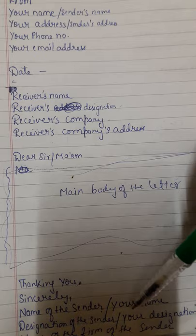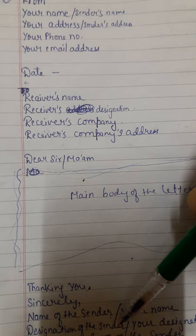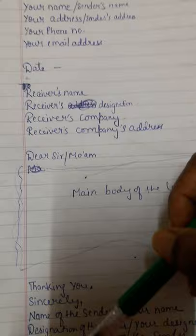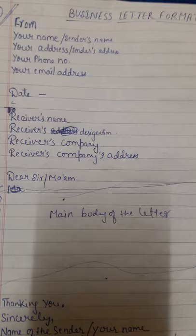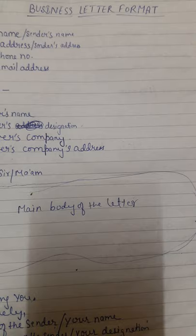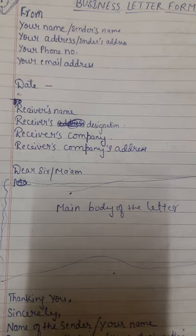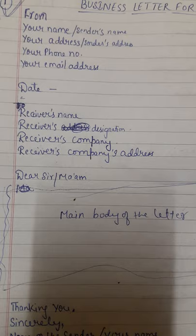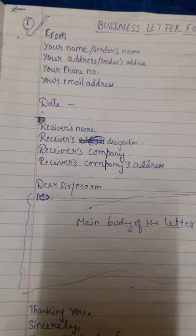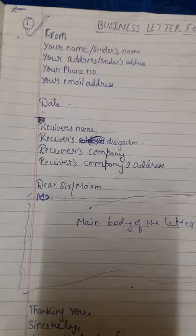Just below the complimentary close, write the name of the sender, because you are writing the letter. Just below that write your designation, and just below that write the name of the company you are working in. This completes the whole letter. You need to remember where to write the sender's address and where to write the receiver's address to make your answer correct, as this is a universal format. In my next video I will talk about the second type of business letter format — till then, bye and thanks for watching.